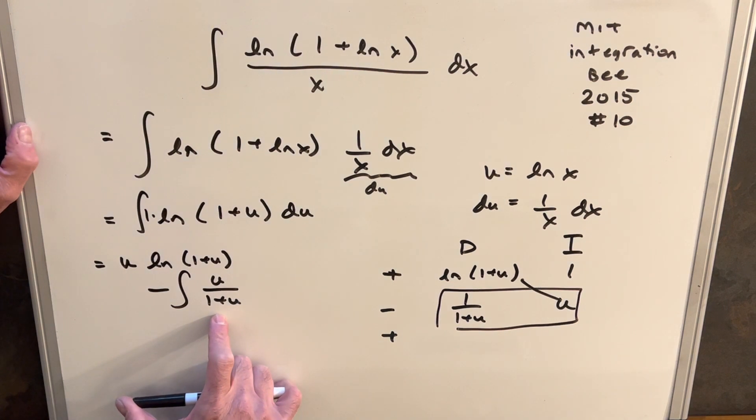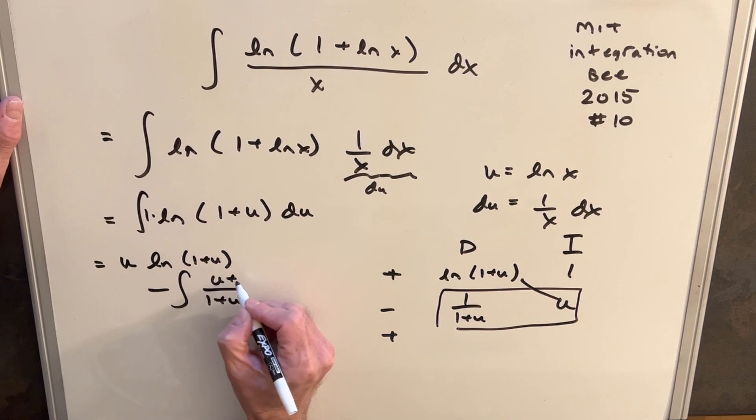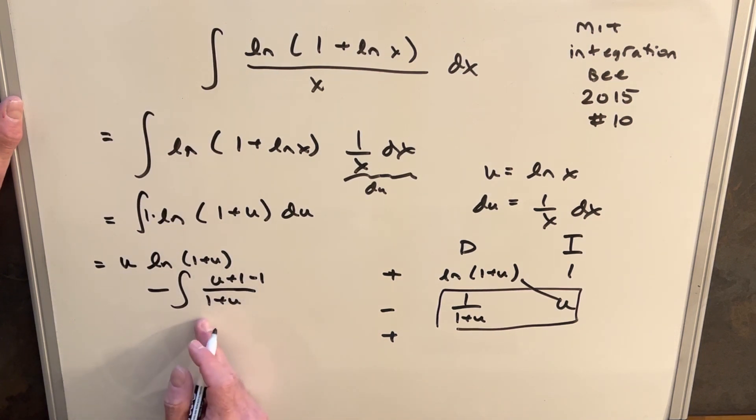Then for this integral, we could do long division, but it's really unnecessary. This is kind of the simplest case possible. We could just add a 1 and subtract a 1. And then let's rewrite this and look at it.